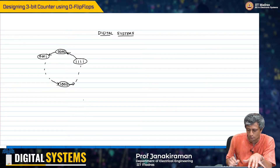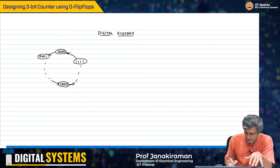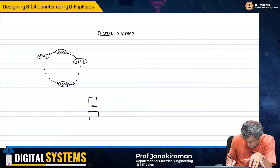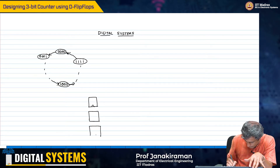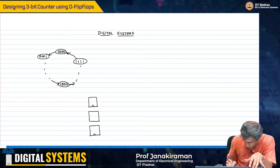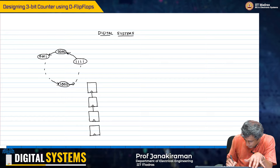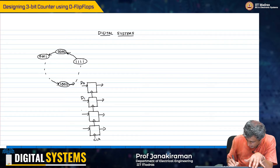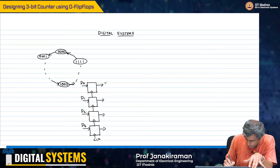I have 4 bits representing the states, which is 16 states, and therefore I need 4 D flip-flops. I have 4 D flip-flops here. The inputs are D0, D1, D2, D3, and my outputs are going to be y0, y1, y2, and y3.